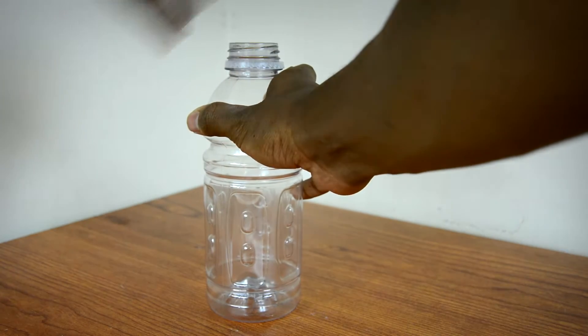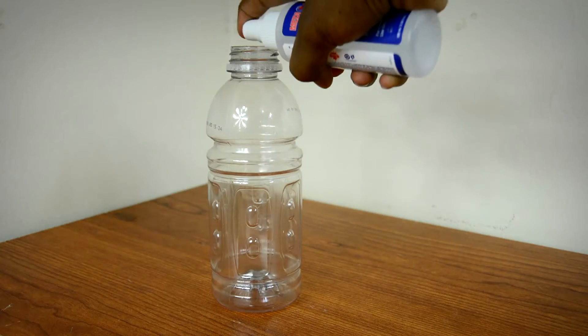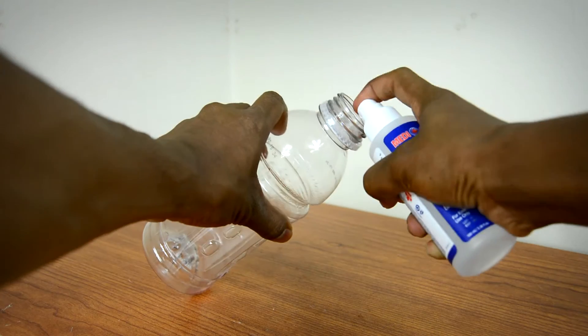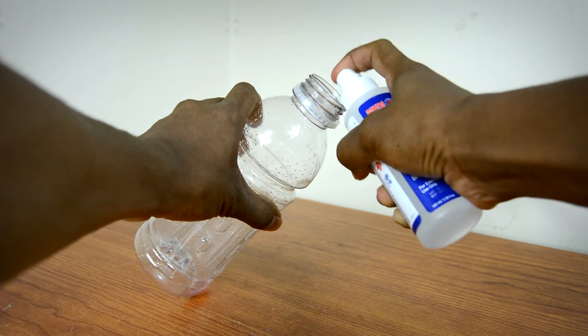So first you have to start off by putting rubbing alcohol inside the bottle. I'm using 70% rubbing alcohol, but I think the higher the concentration the better. So if you have 90% or 99%, even better. Just go ahead and spray a little bit into the bottle.